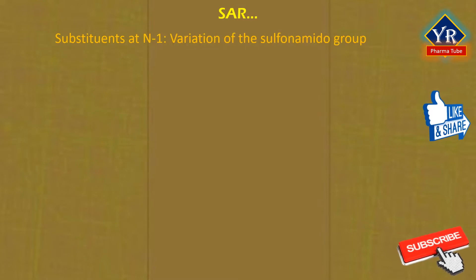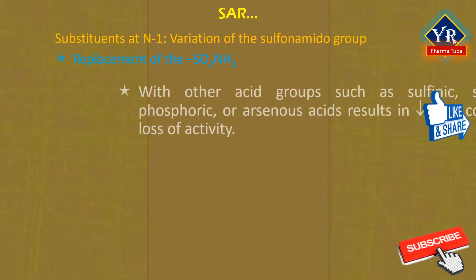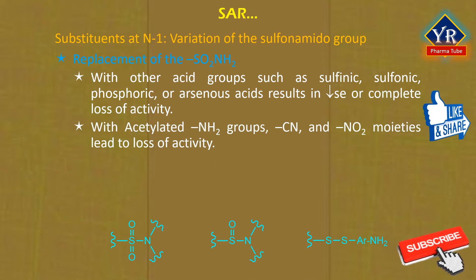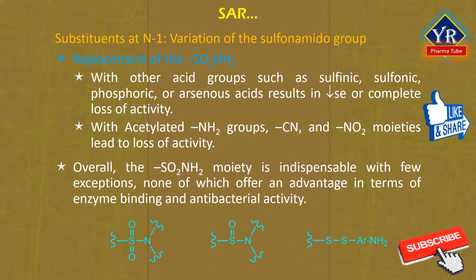We shall now see the substituents at N-1, that is variations of the sulfonamido group. Replacement of the sulfonamide group with other acid groups such as sulfinic, sulfonic, phosphoric or arsenous acids results in a decrease or complete loss of antibacterial activity. Antibacterial activity can be partially retained in some derivatives in which the sulfonyl center is reduced to the sulfoxide oxidation state or exists as a disulfide joined to an additional para-substituted aniline ring. Simple para-substituted phenylene diamines, derivatives in which the sulfonyl center is excised, are inactive. Acetylated amino groups as well as cyano and nitro moieties are not suitable sulfonamide replacements and lead to loss of activity. Overall, the sulfonamide moiety is fairly indispensable with few exceptions, none of which offer any advantage in terms of enzyme binding and antibacterial activity.